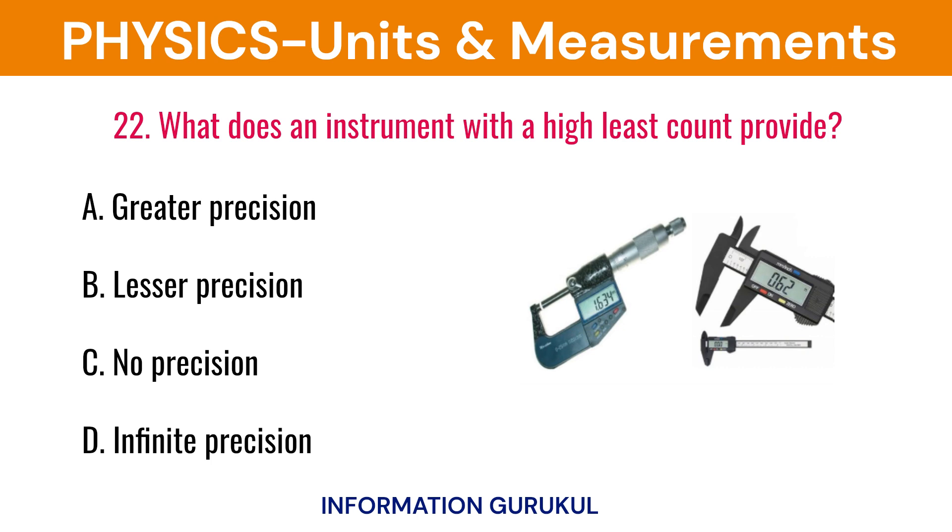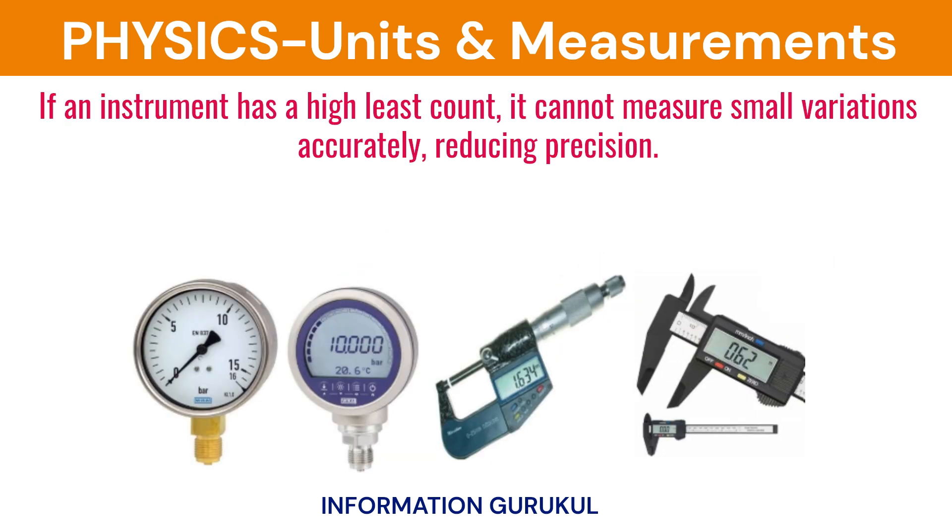What does an instrument with a high least count provide? Lesser precision. If an instrument has a high least count, it cannot measure small variations accurately, reducing precision.